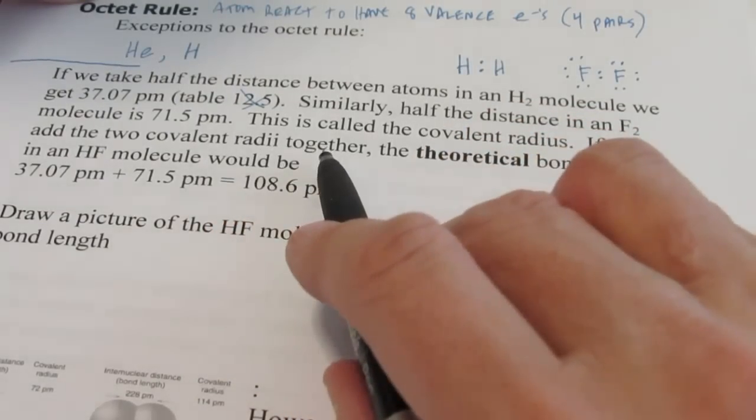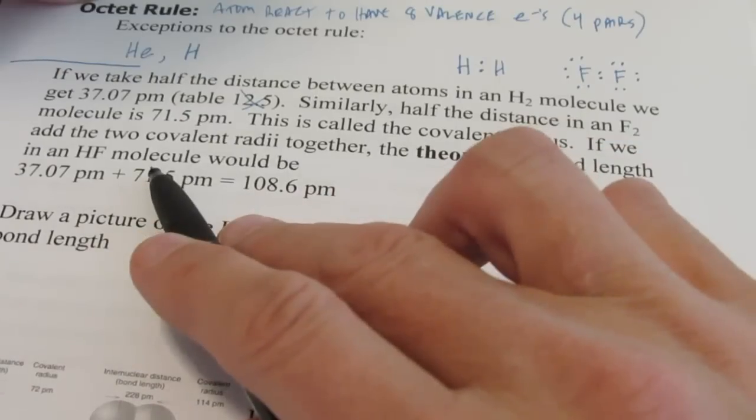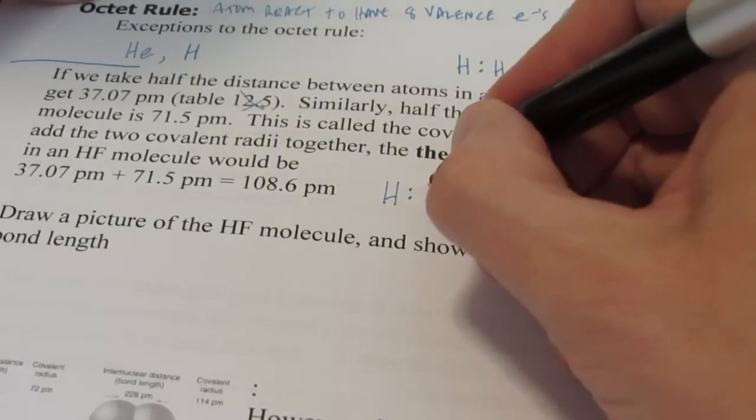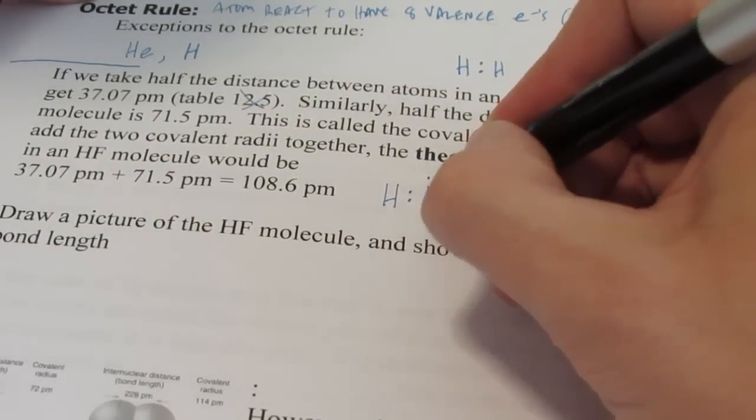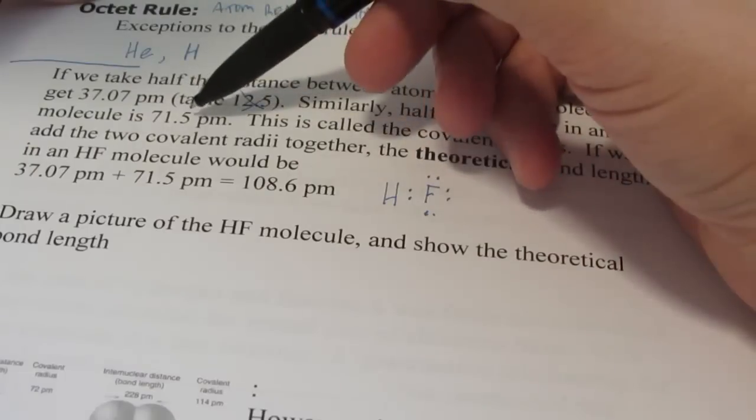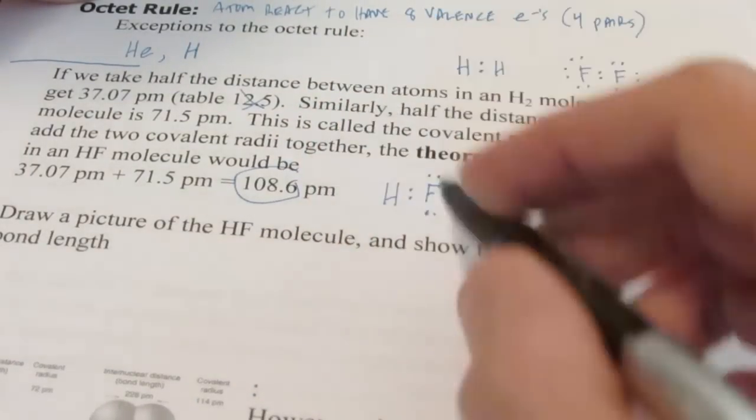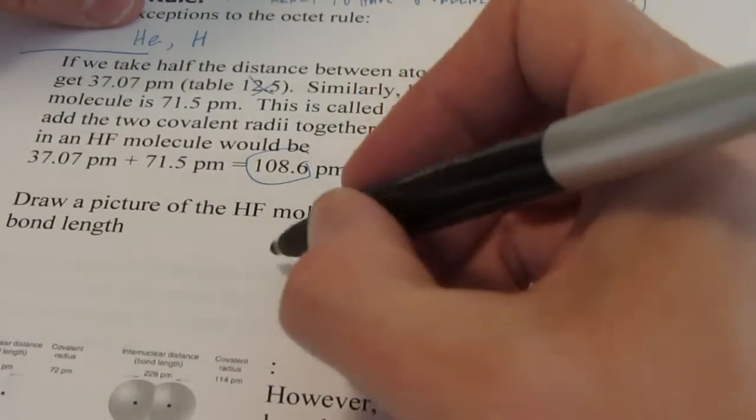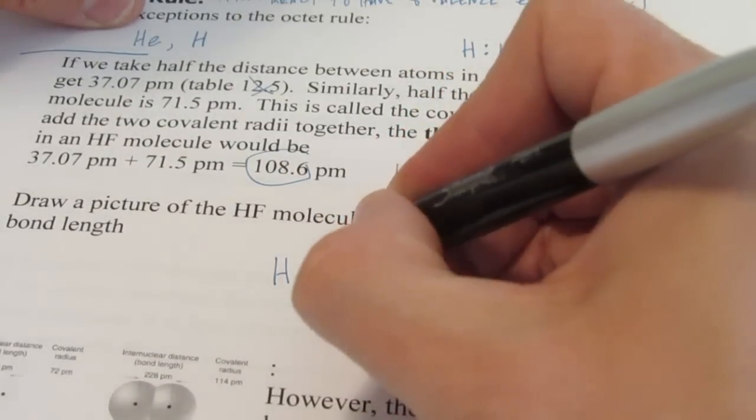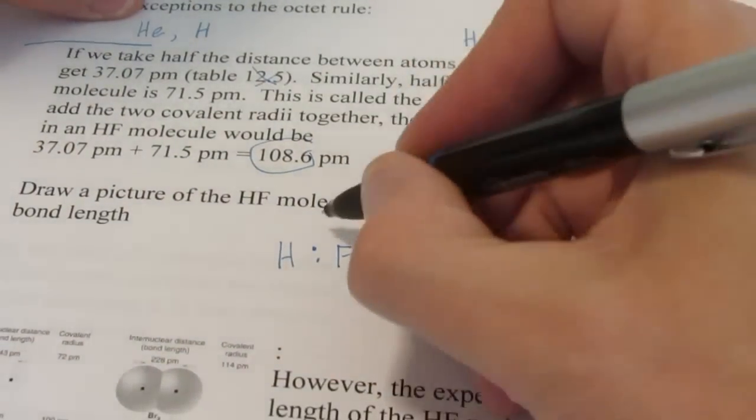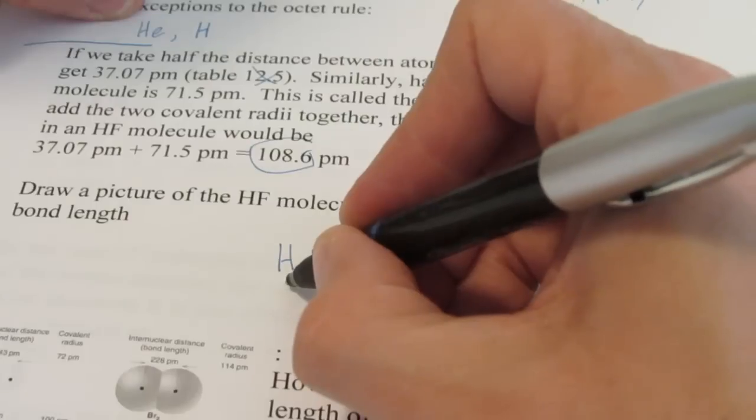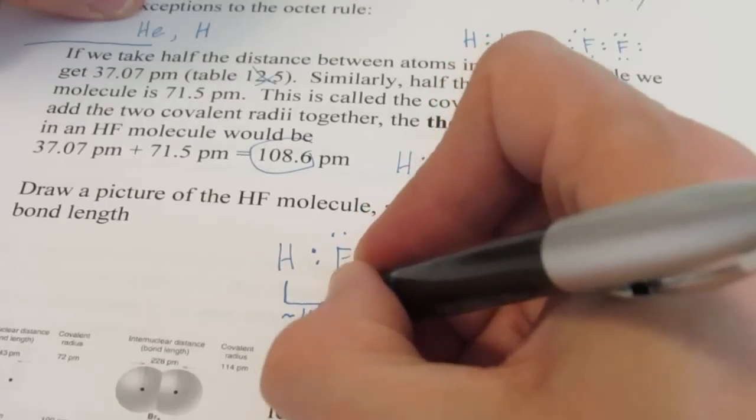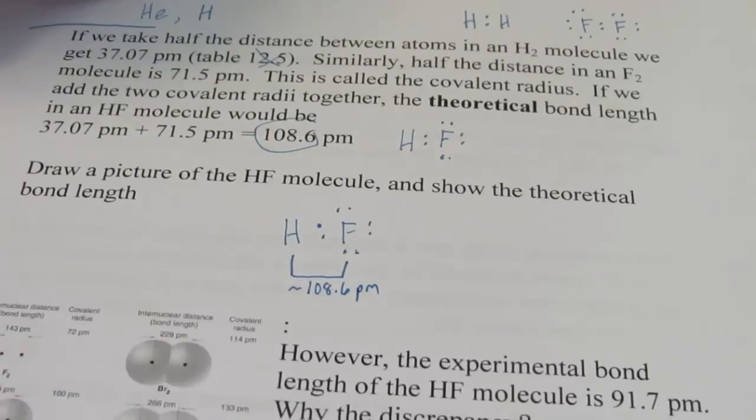Now if we add the two covalent radii together, the theoretical bond length in HF would be half the distance between hydrogen atoms and half the distance between two fluorine atoms. So we know those numbers are 37.07 and 71.5. If we do that, we would get a bond distance between the two of about 108.5 to 108.6 picometers. That theoretical bond length between the nucleus of the hydrogen atom and the nucleus of the fluorine atom would be about 108.6 picometers.